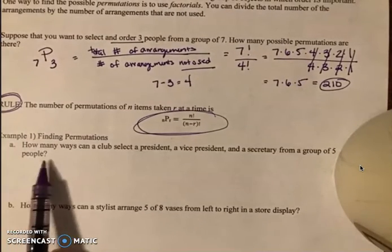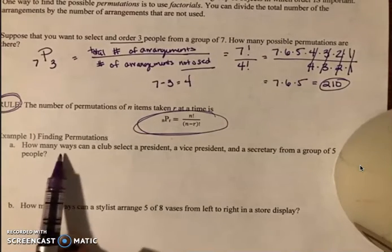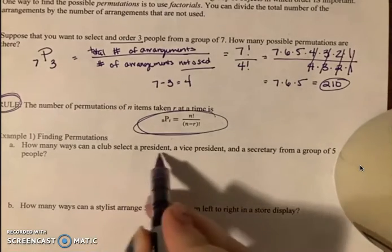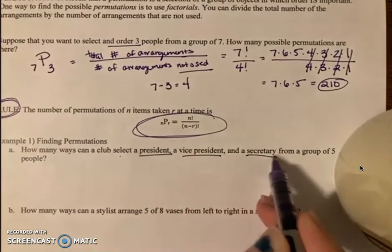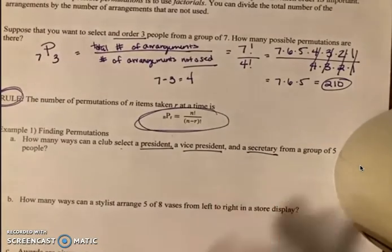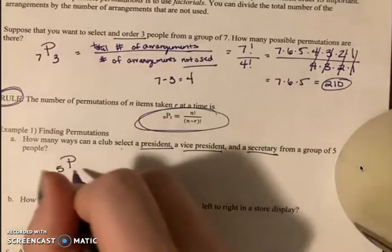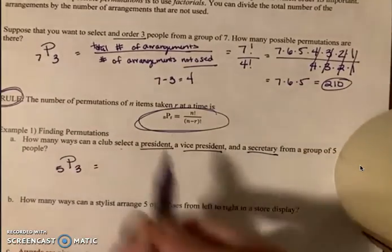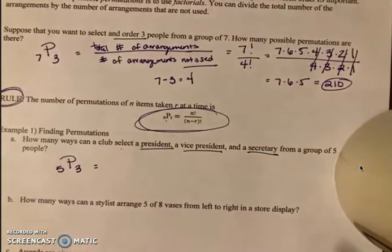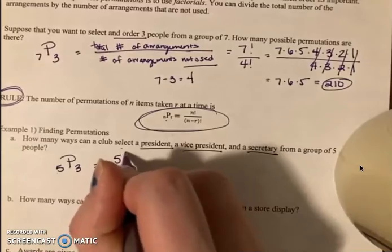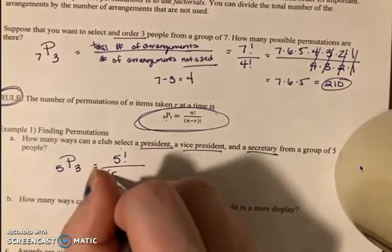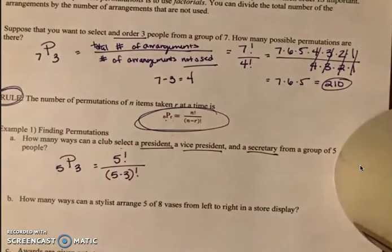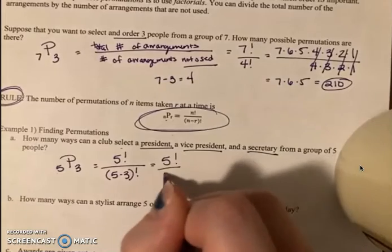Example one says how many ways can a club select a president, a vice president, and a secretary from a group of five people. President, vice president, and secretary—those are three different roles. So this is a permutation where we have five people we're choosing from and three different roles. So n is five and r is three. My rule is n factorial, so five factorial, over n minus r, so five minus three factorial. That gives me the total number of arrangements and the number of arrangements not used. So this becomes five factorial over two factorial.